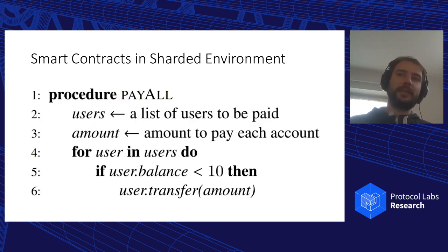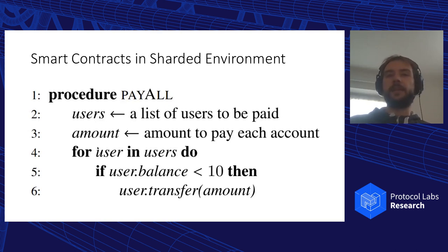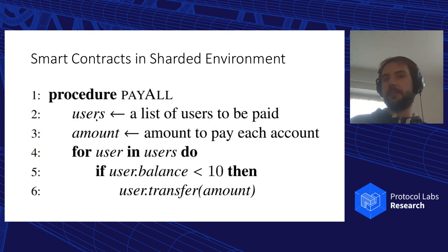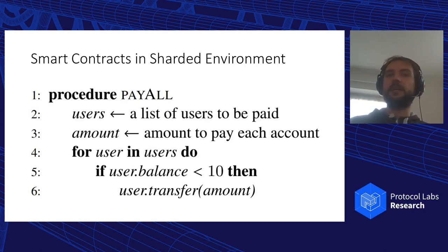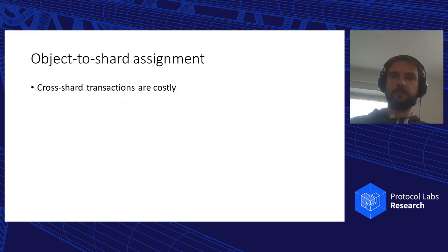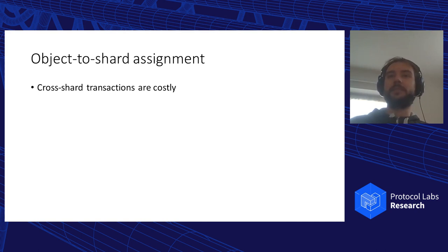It gets even more complicated with smart contracts. Consider a simple procedure with a list of users to pay a certain amount — the function iterates over users, and if a user has less than 10 coins, it pays them. If all users are in the same shard, we need a single transaction. But if we have 100 users spread across 50 shards, we need at least one transaction in every single shard plus global coordination between all involved shards. Cross-shard transactions are costly, and can get significantly more expensive with smart contracts, making object placement a very important question.